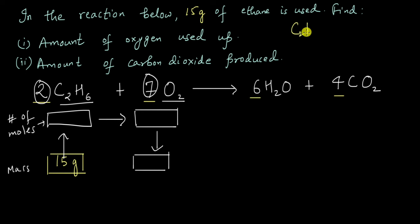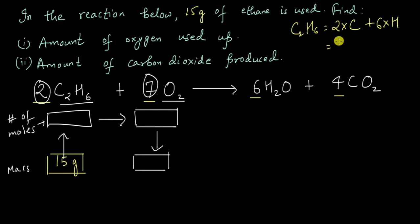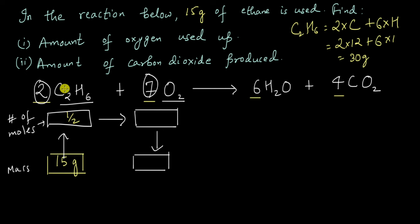One mole of ethane will have a molar mass of twice the molar mass of carbon plus six times the molar mass of hydrogen, because there are two carbon atoms and six hydrogen atoms in an ethane molecule. For carbon, the molar mass is 12, so this is 2 × 12. For hydrogen, it's 1. So we get 24 + 6 = 30 grams. So there are 30 grams in one mole of ethane. Dividing 15 by 30, we get one half — so there are 0.5 moles of ethane.